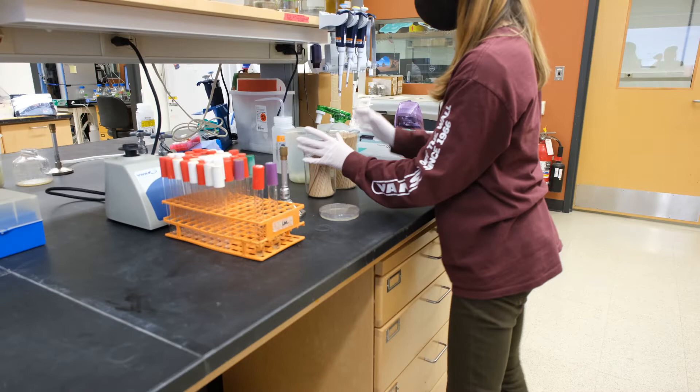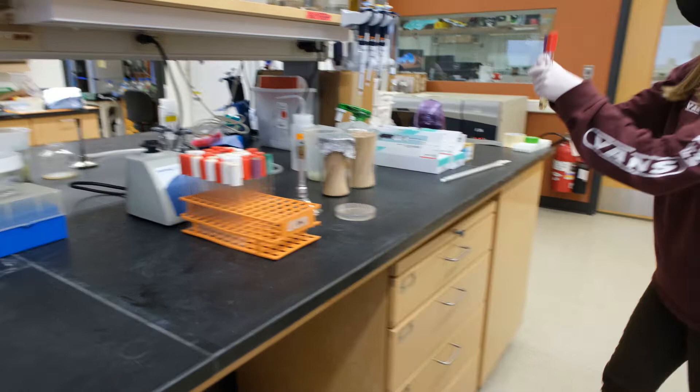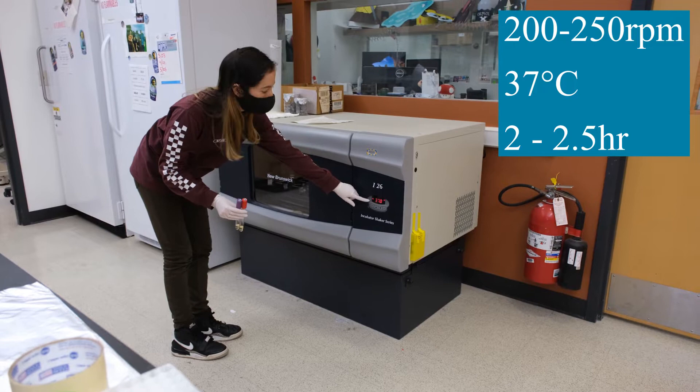You should be able to see colony material blobs floating in the LB and turn off your flame and put your tubes in the shaker at 200 rpm, 37 degrees celsius, and incubate with shaking for two to two and a half hours.